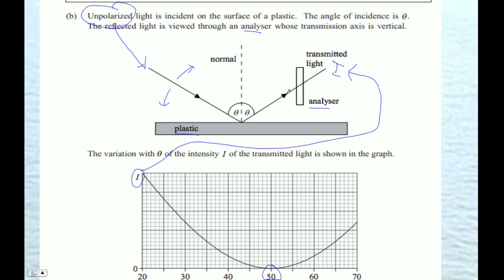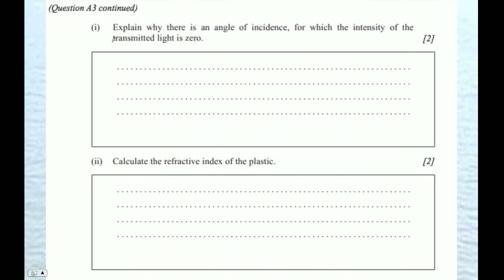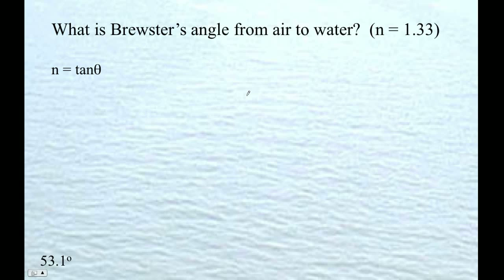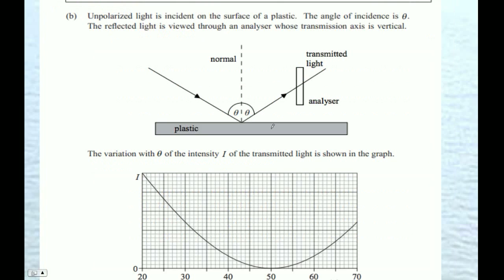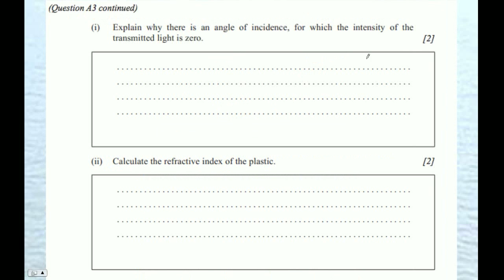So let's just remember the 50. Let's look at the next page. Explain why there's an angle of incidence for which the intensity of the transmitted light is zero. Well, there is an angle, because that's the Brewster's angle. The light coming off of here is horizontally polarized, and therefore cannot make it through the vertically polarized filter. So two things we need to say - one is that it's horizontally polarized, two, that it will not make it through the vertically polarized filter.